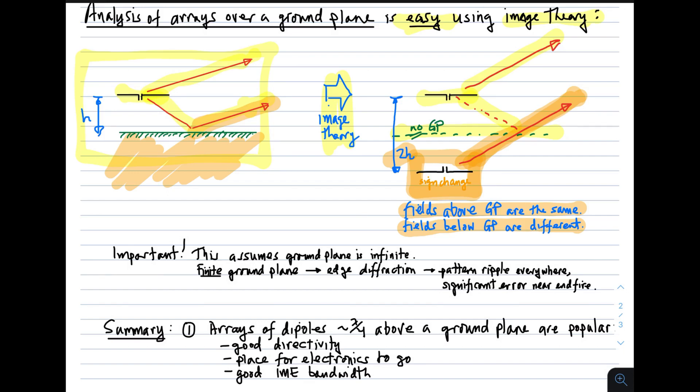Obviously, because in the first original problem the fields below the ground plane are zero, but in the new problem the fields below the ground plane are not zero. So if we keep that limitation in mind, that the fields below the ground plane will be different, image theory works great for figuring out what the field should be above the ground plane. And what we have done then is removed the ground plane and replaced it with another dipole, and that makes the problem a lot easier to do. Now, before proceeding, I should make one other comment here, and this is important.